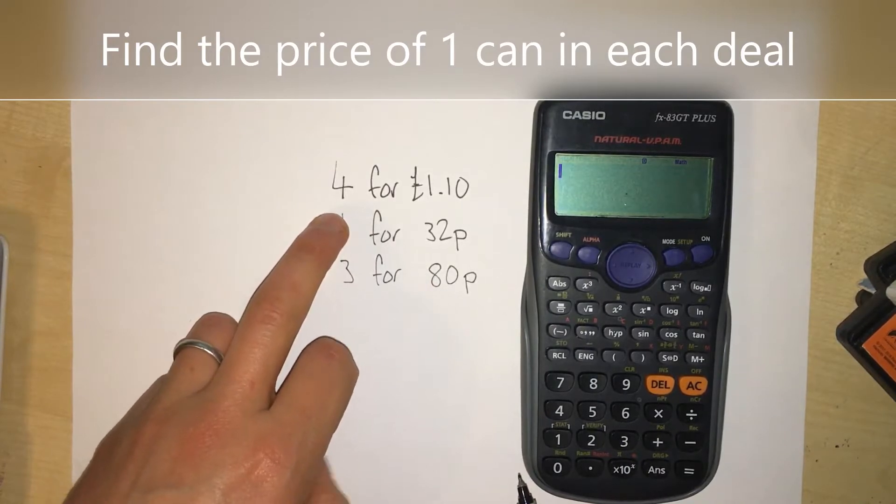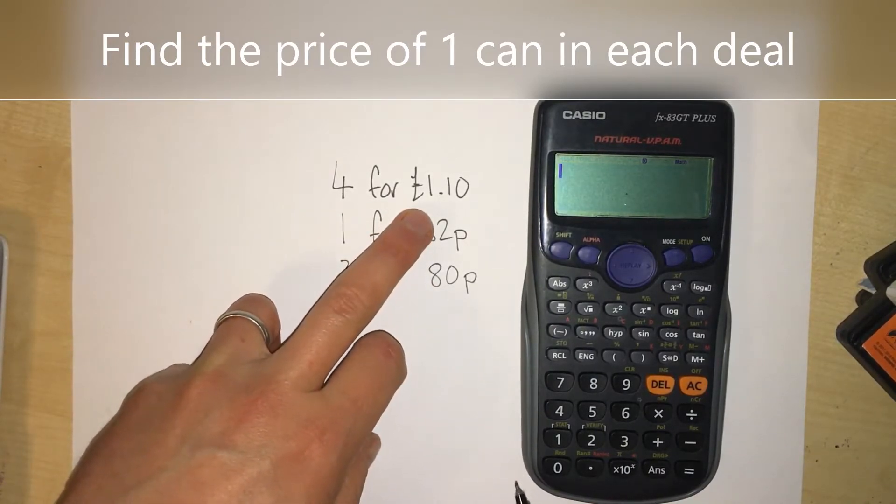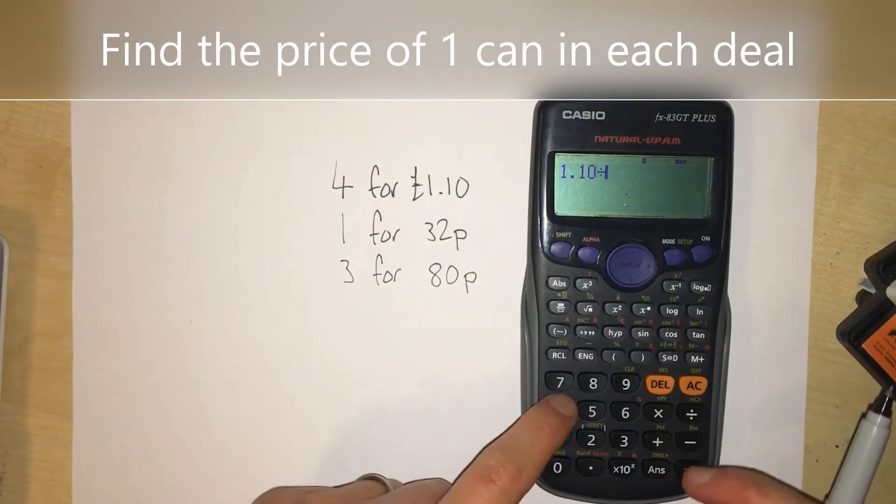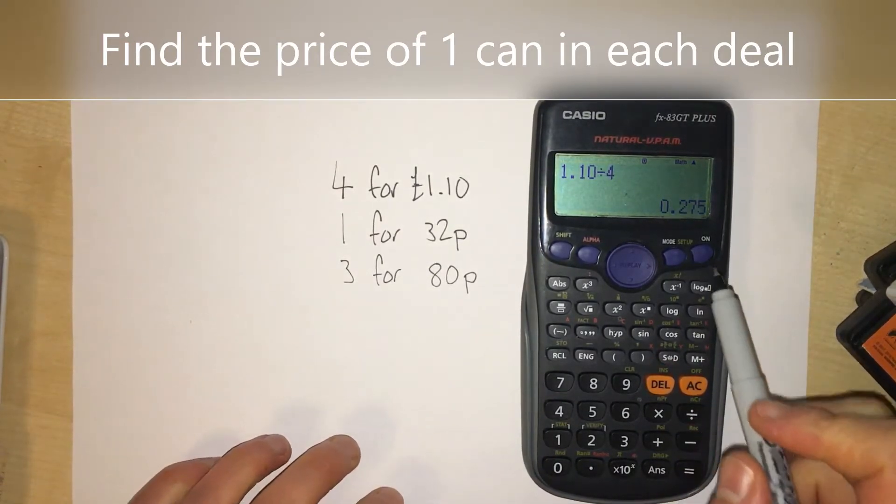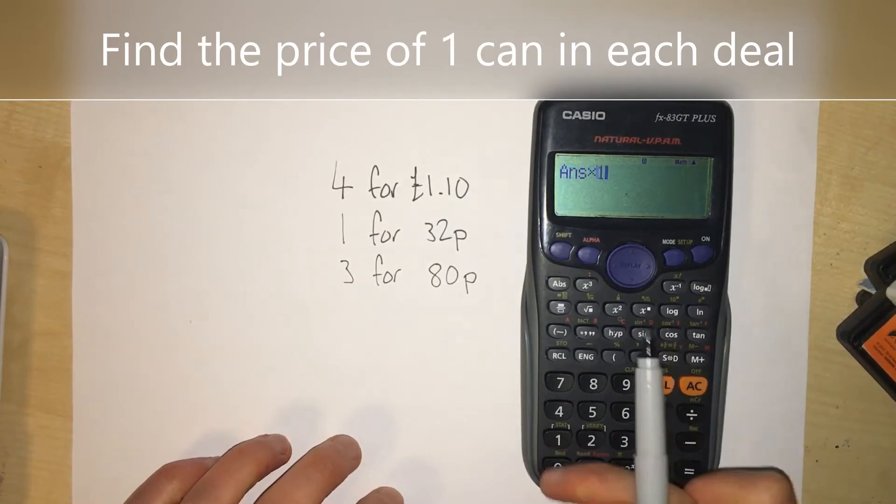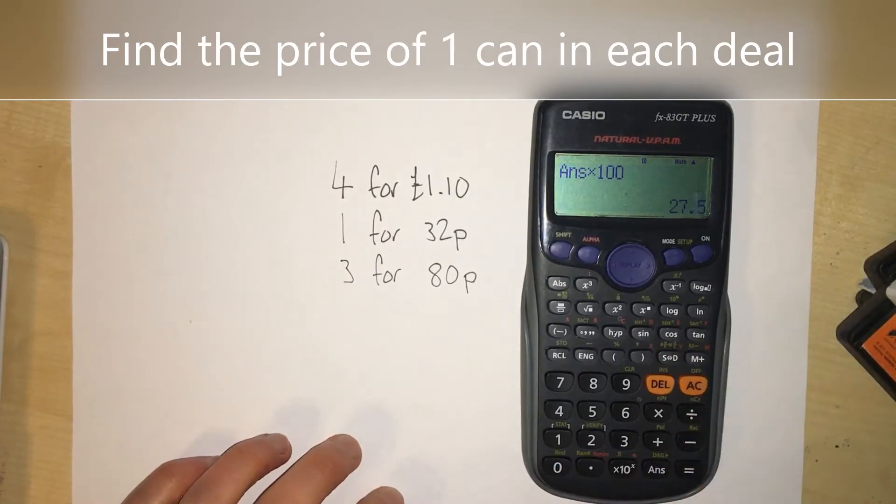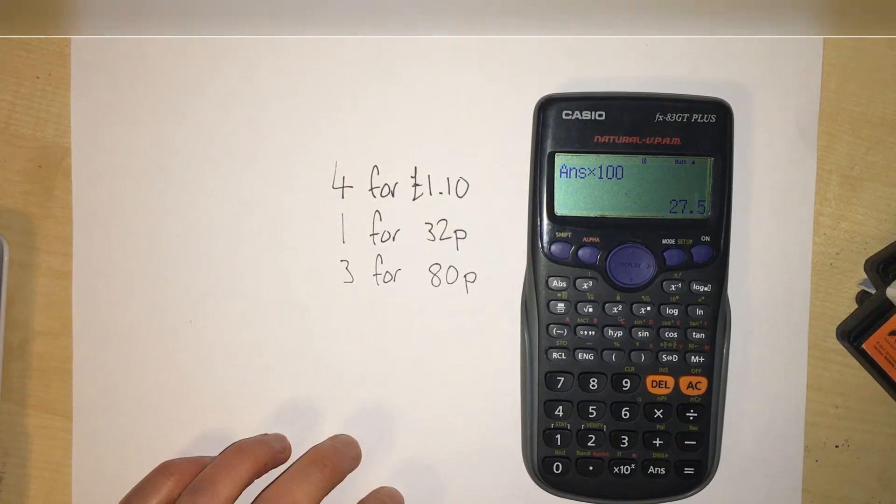£1.10 divided by 4 is 0.275 pounds, which if I multiply it by 100 tells me it's 27.5 pence for one can.